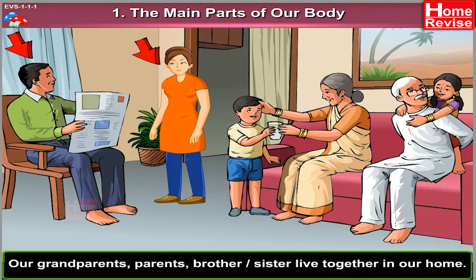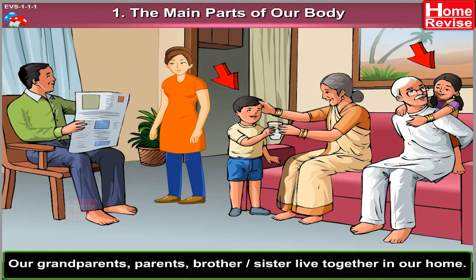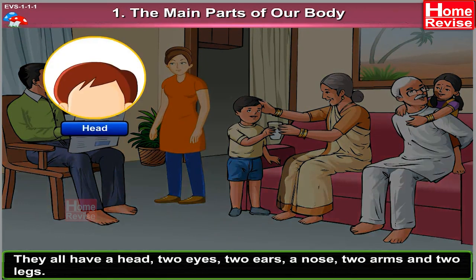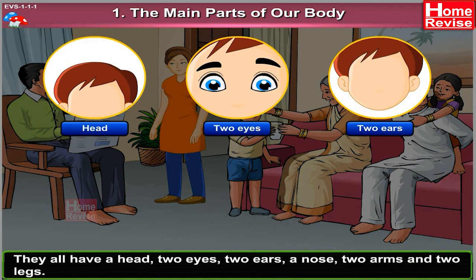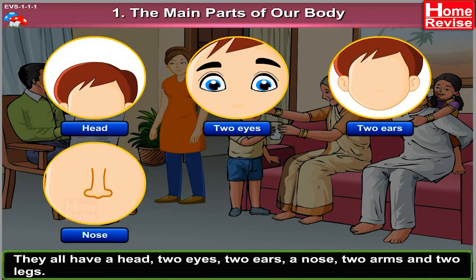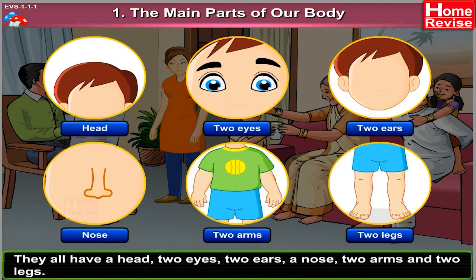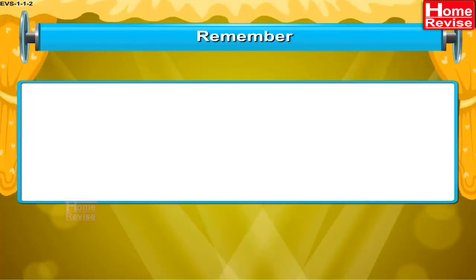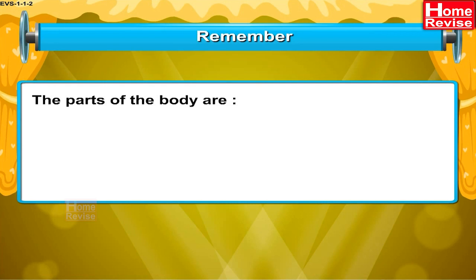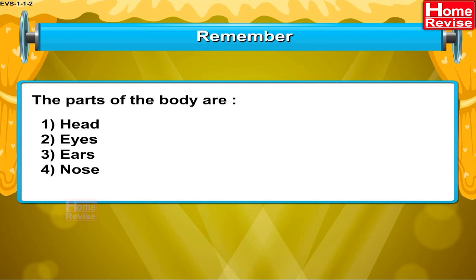Our grandparents, parents, brother or sister live together in our home. They all have a head, two eyes, two ears, a nose, two arms and two legs. Remember, the parts of the body are: Head, Eyes, Ears, Nose, Mouth, Neck, Shoulders, Back.